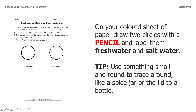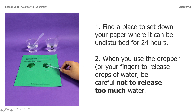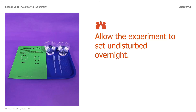Practice releasing drops of water into the cup until you can make drops that are always the same size. Then carefully release three drops of fresh water into the fresh water circle. Use your other finger — or a separate dropper — for the salt water so you don't contaminate them. No mixing. Drop three drops of salt water into the salt water circle. Once you've done that, find a place to set down the paper where it's not going to be disturbed — no rolling it around. Let it stay there for at least 24 hours, undisturbed, and then come back and check in with your investigation.